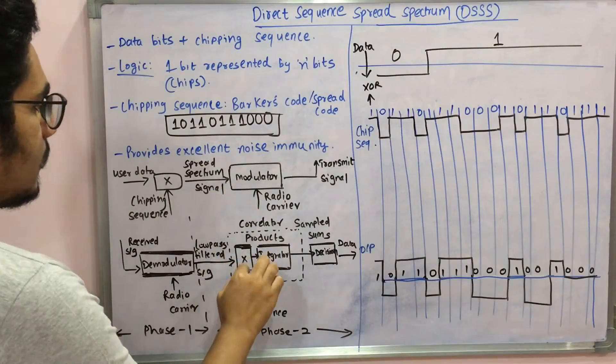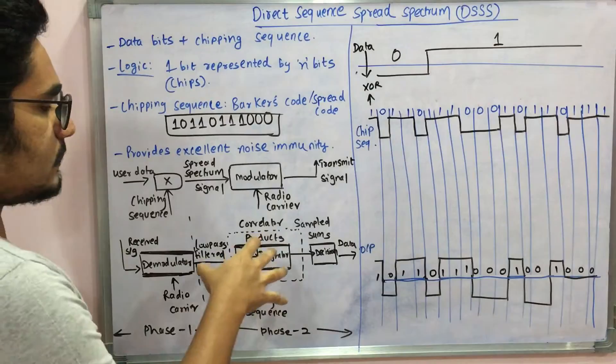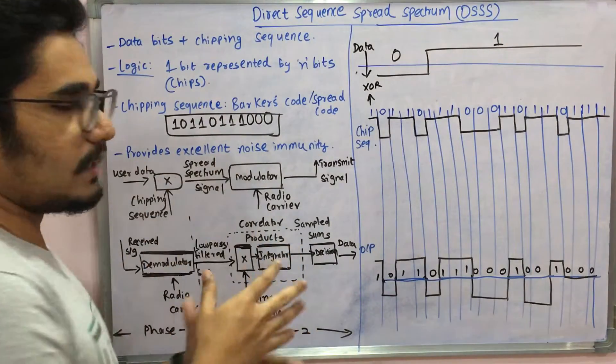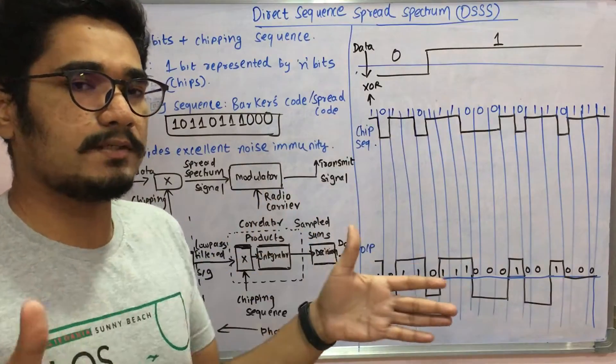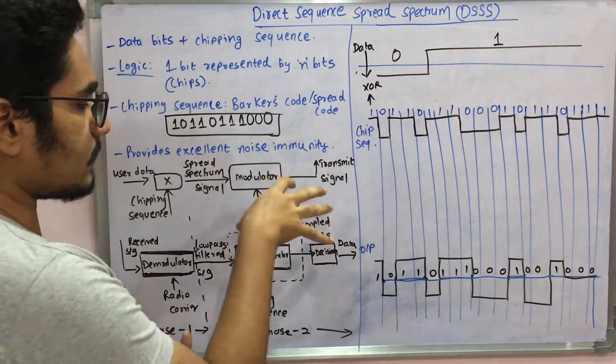Then you have a correlator. That correlator will have two different products: the chipping sequence, which is X, and then you have an integrator which integrates. Here you have the combined data signal, then it will remove the chipping sequence and the data bits are separated. It will give sample points or sample sums.